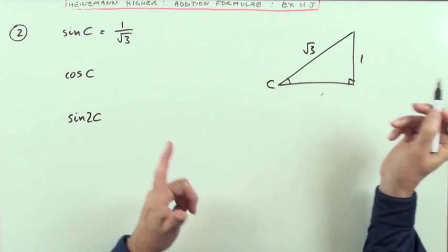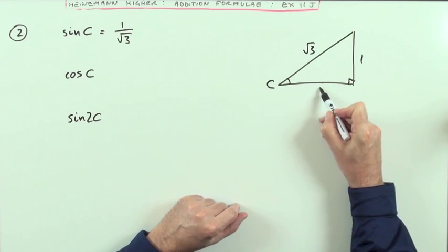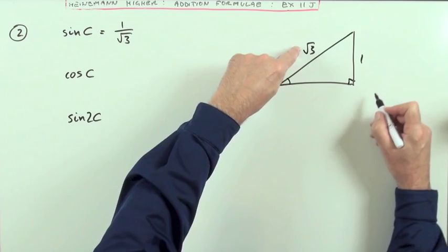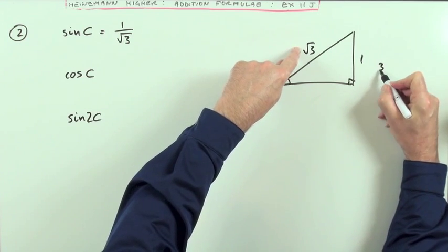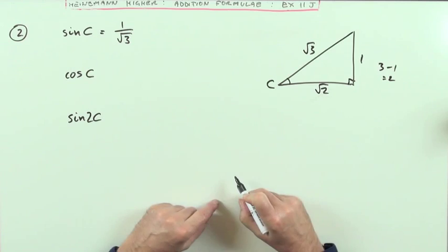And then the simple bit of Pythagoras, which is what that method is anyway, takes you to this side. That's the shorter side, so it'll be the difference in the squares. The square of that root takes you back to 3. The square of 1 is 1, so that would be 2. So here you've got root 2.